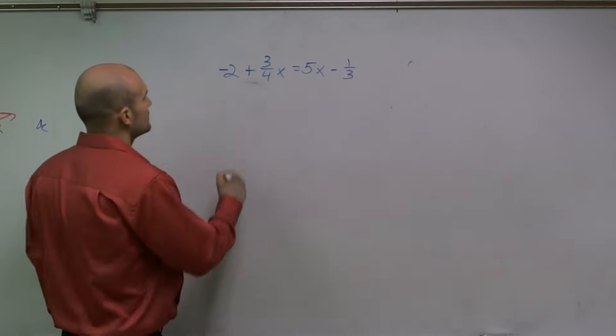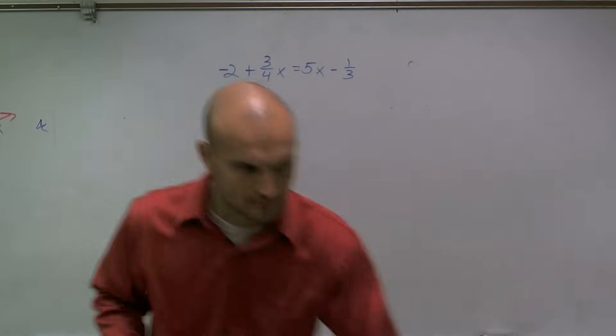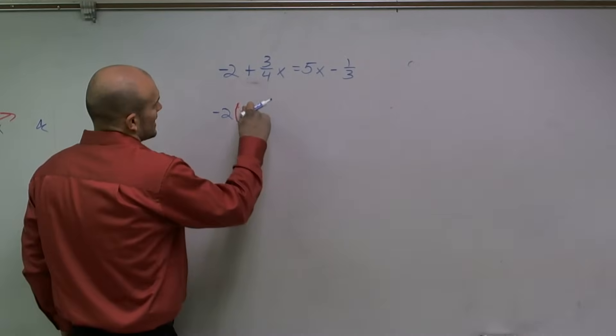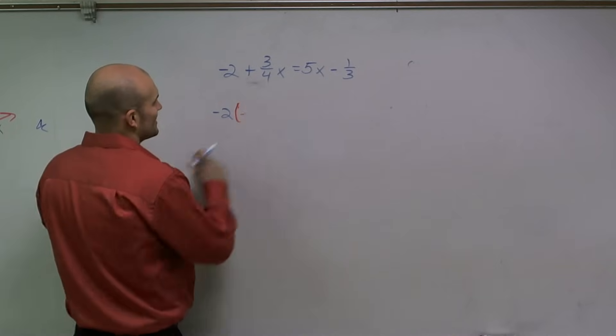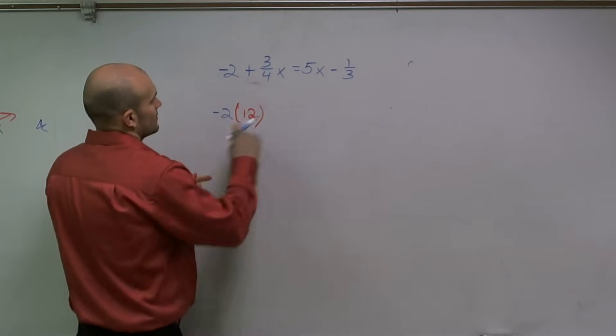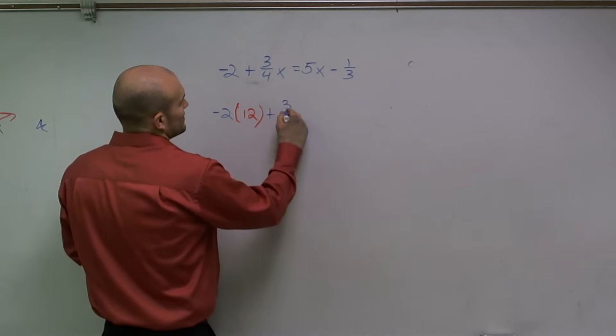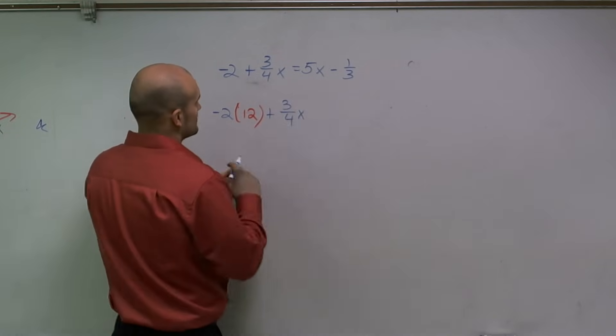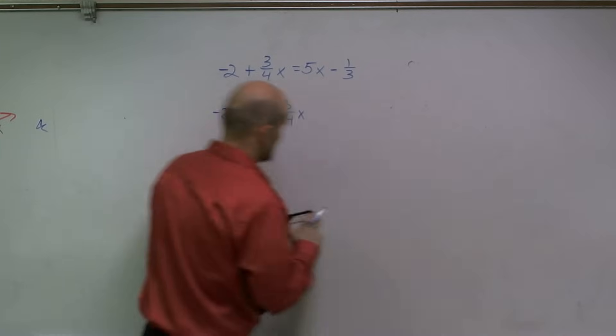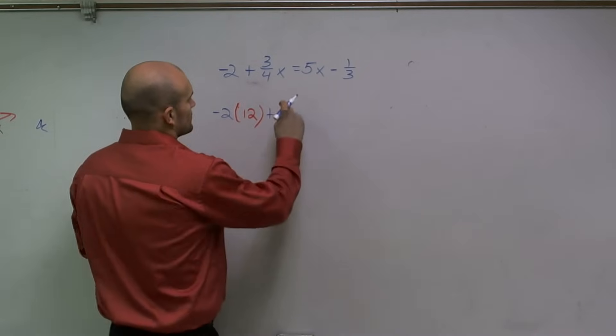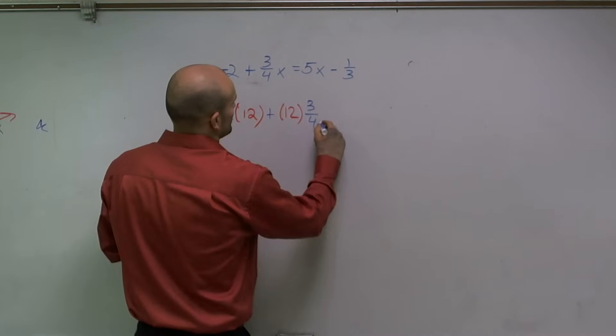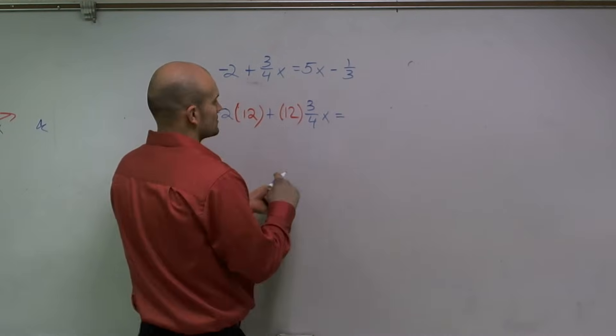So I'll do negative 2 times 12, plus 3 fourths x times—let's write that in front, it'll help us out—times 12, times 3 fourths x, equals 12 times the right side.